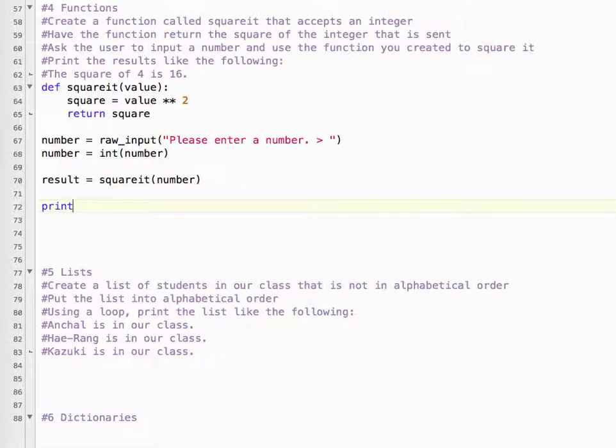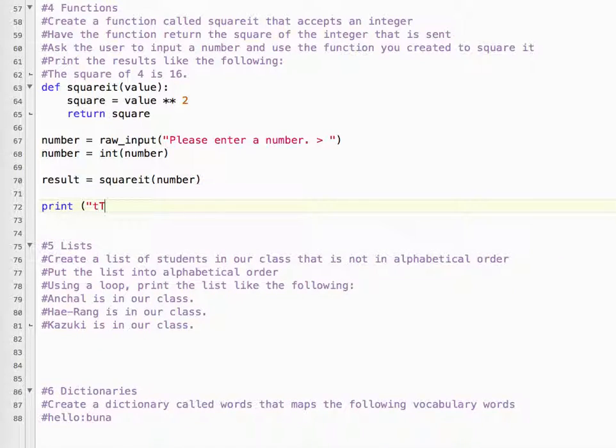and then print it out. So print, the square of percentage s is percentage s. So the first one is the number and the second is the result.